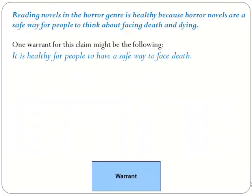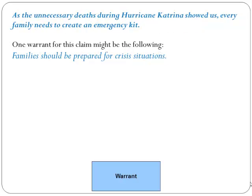Taking a look at the first example — reading novels in the horror genre is healthy because horror novels are a safe way for people to think about facing death and dying — one warrant for this claim might be: 'It is healthy for people to have a safe way to face death.' As you can see, this warrant is very simple. For the next example, 'as the unnecessary deaths during Hurricane Katrina showed us, every family needs to create an emergency kit,' one warrant might be that families should be prepared for crisis situations.